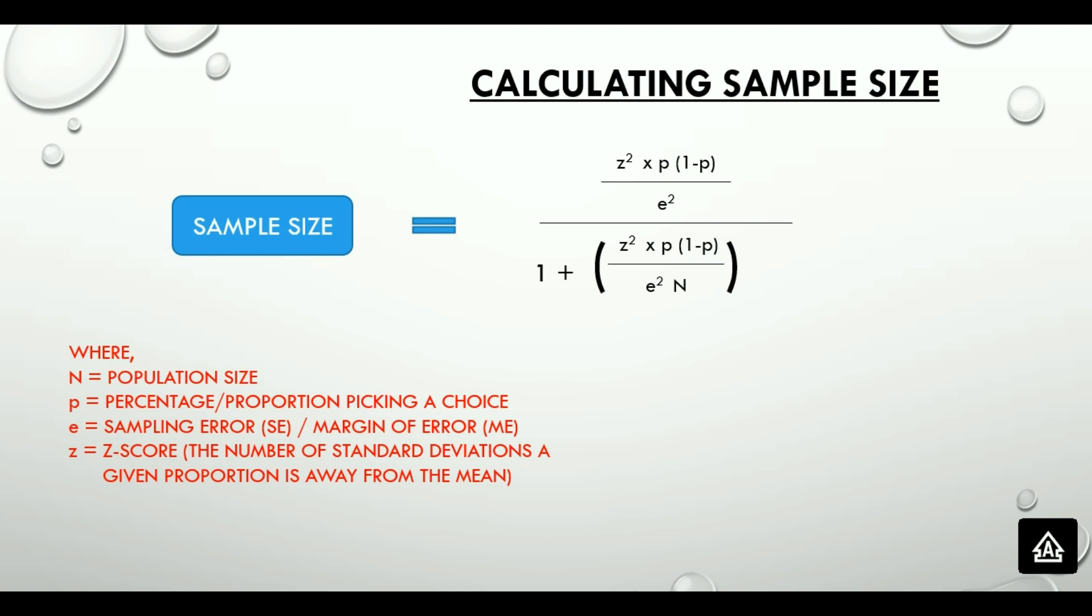E indicates sampling error, also known as the margin of error, and N is the population size. There is also a Z-score table corresponding to the desired confidence level.